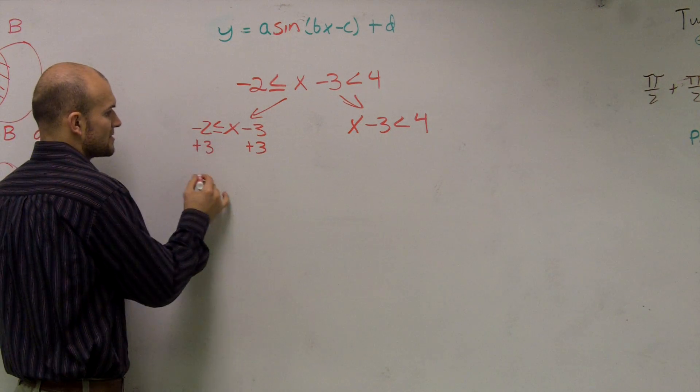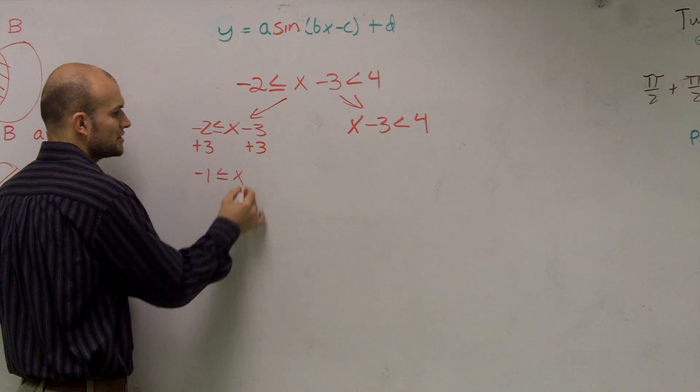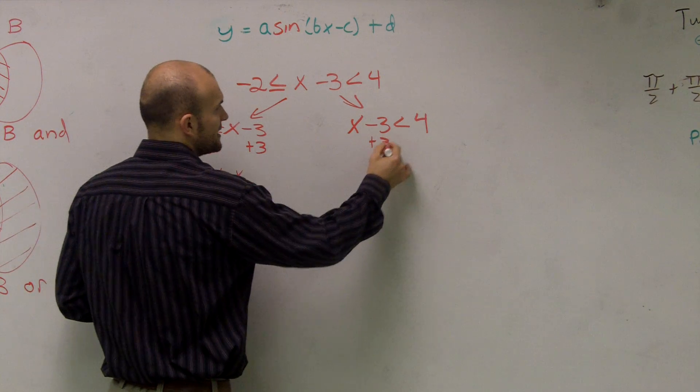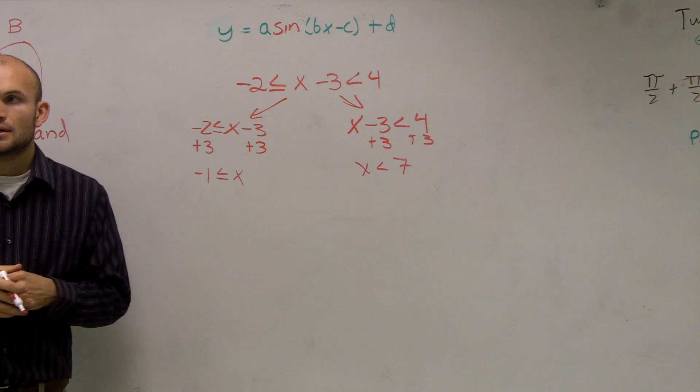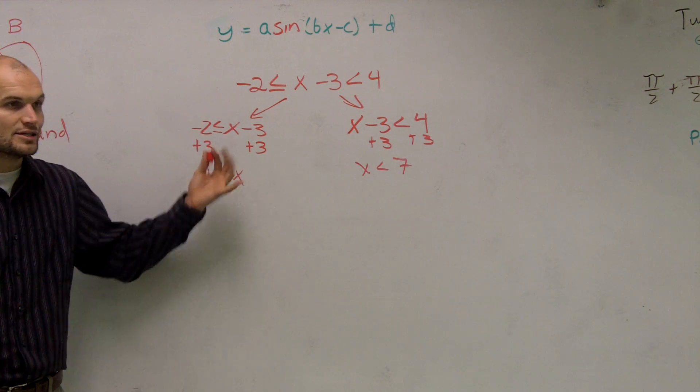So I add a three to both sides. Negative one is less than or equal to x. Add a three. x is less than seven. Now I just need to graph both of these.